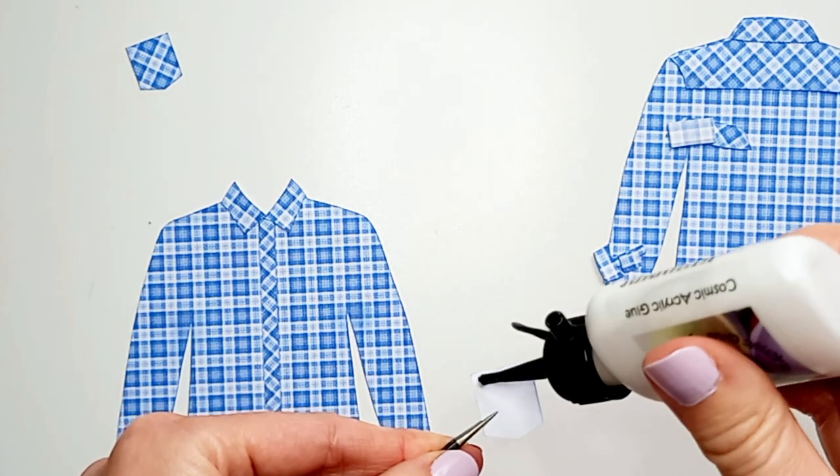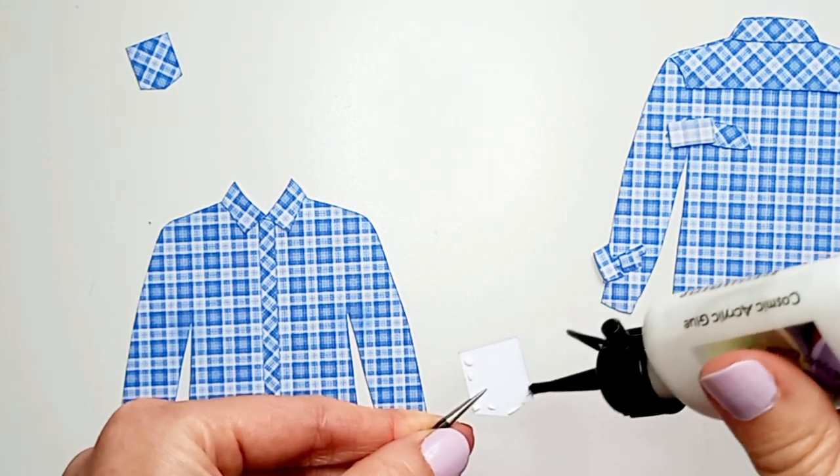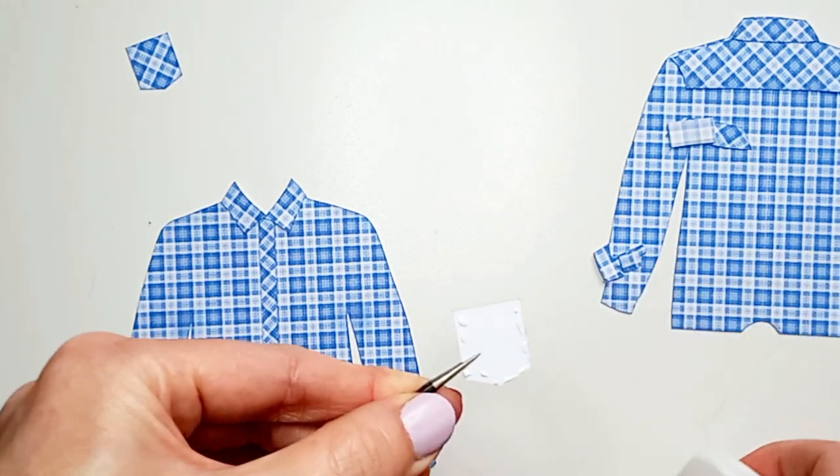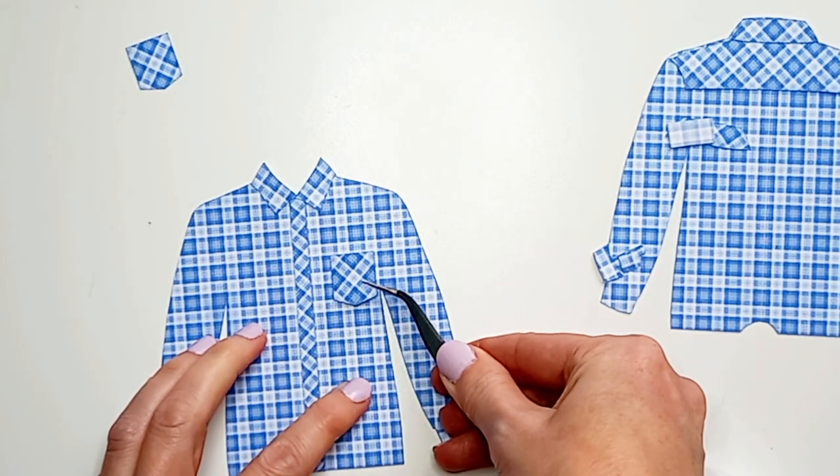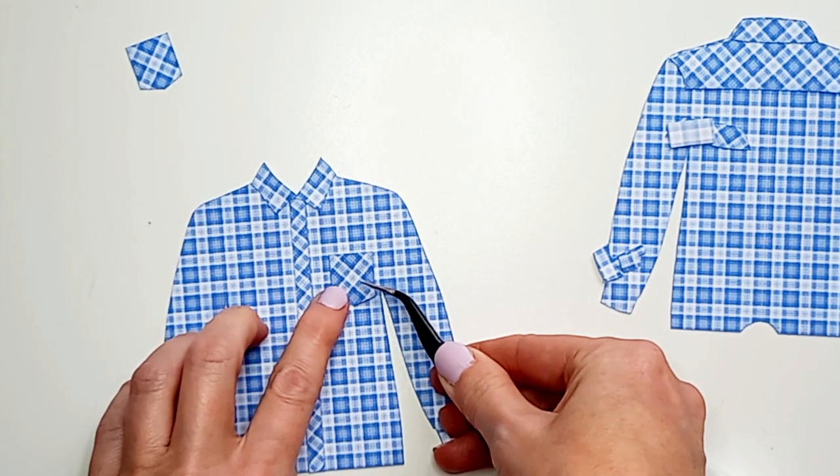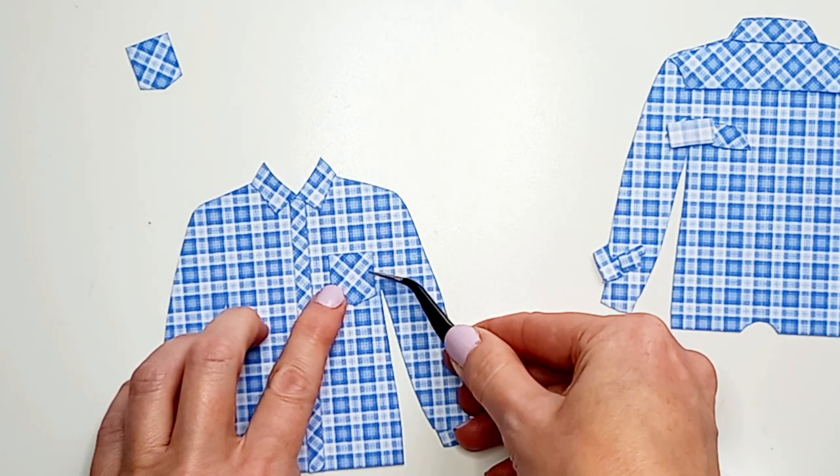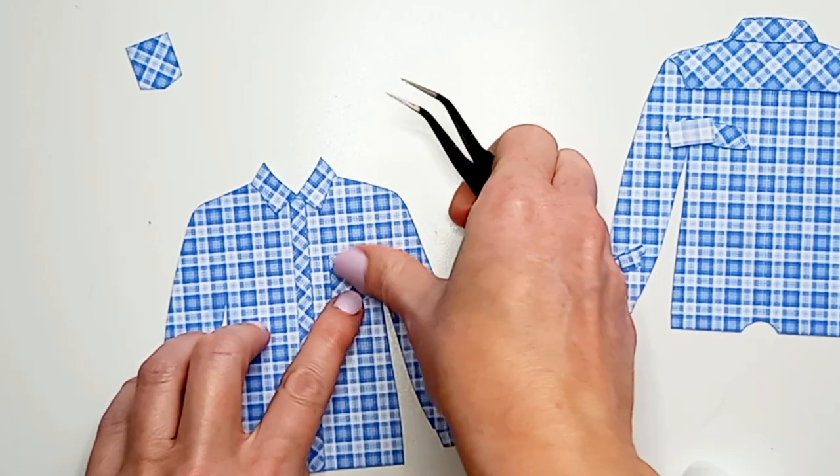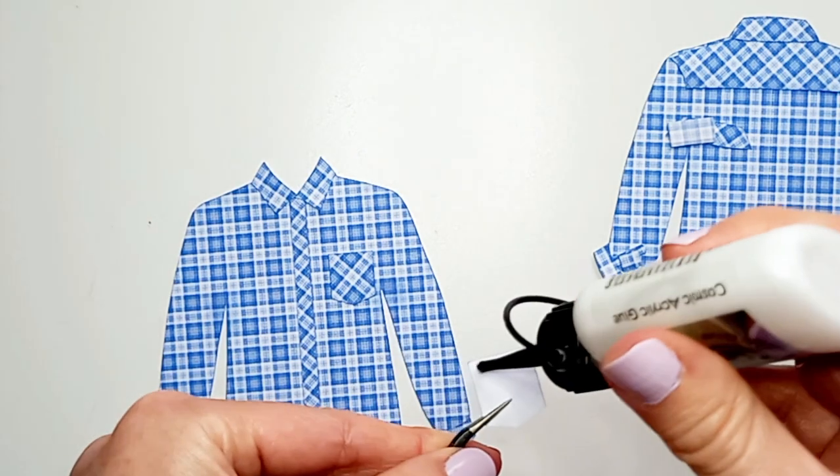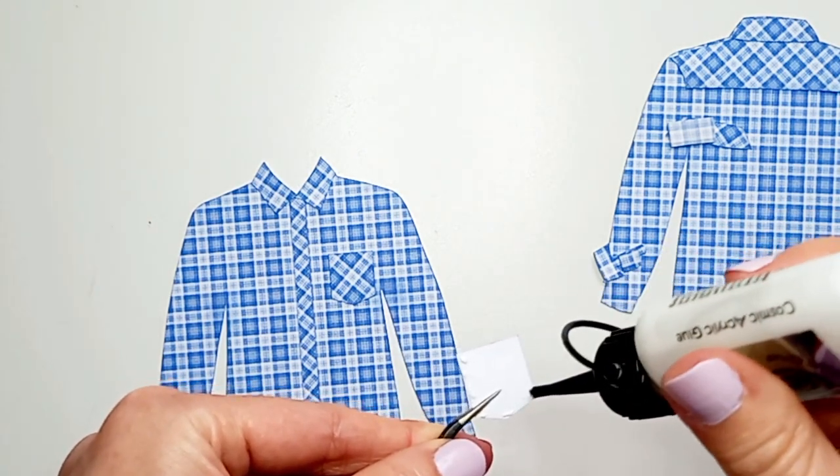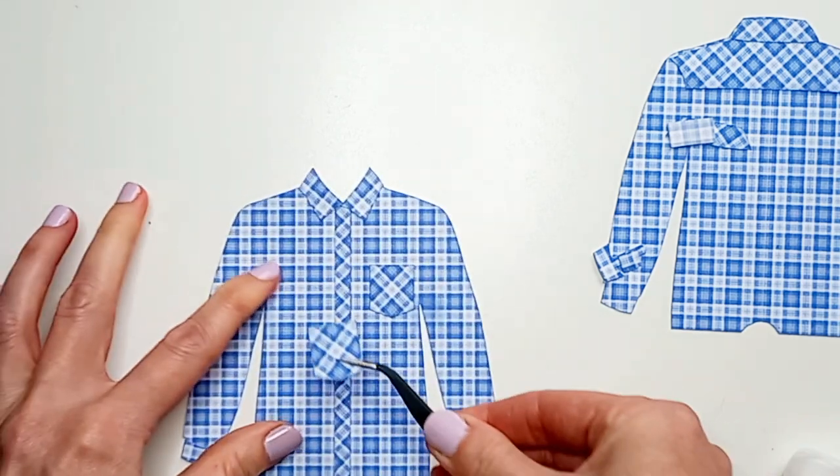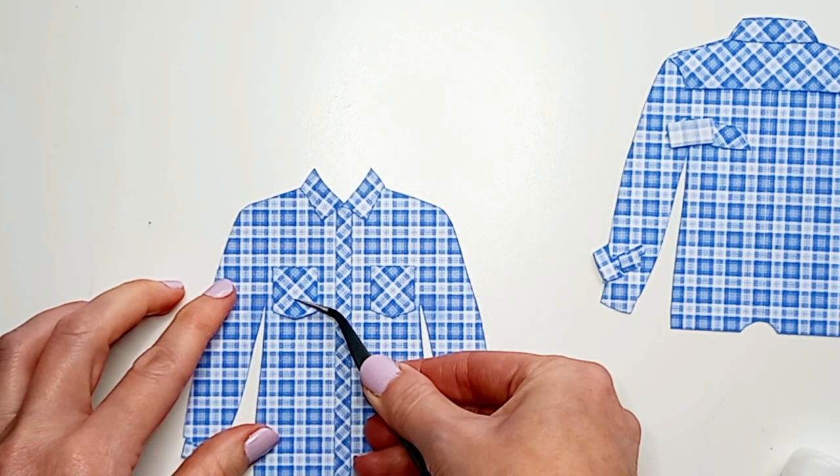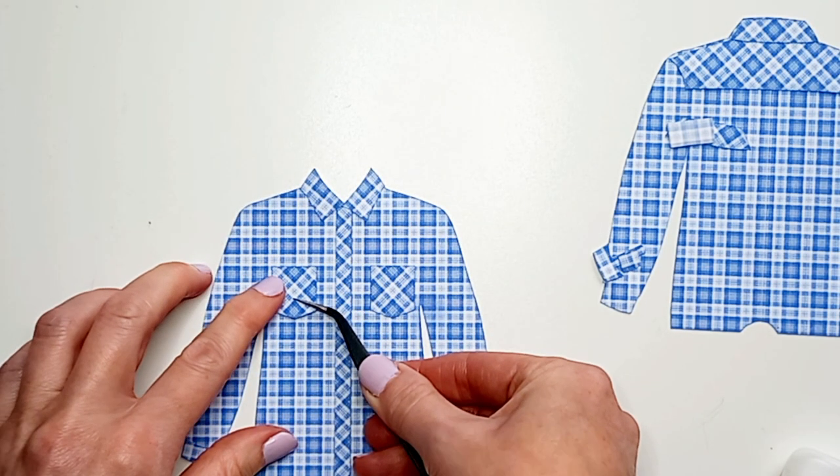Then I'm going to add the pockets. So I'm just putting a thin line of glue down the two sides and along the base just in case I want to add anything into the pocket from the top. Now I'm putting both pockets on but you could just have one or no pockets at all. But if you are using two then just try and make sure they're both lined up equally.